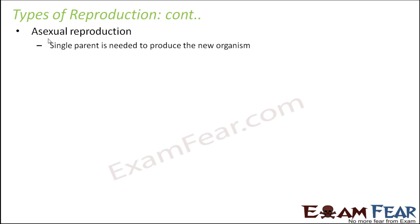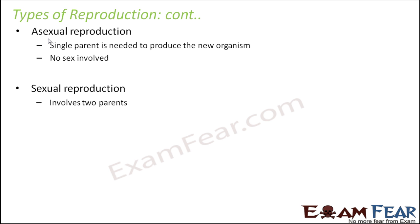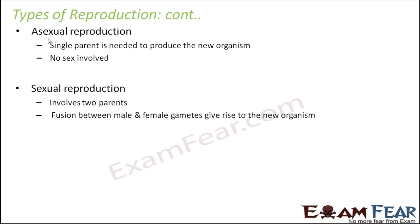In asexual reproduction, a single parent is needed to produce the organism. You do not need one male and one female — just one organism alone can produce a new organism. Therefore no sex is involved, meaning no differentiation of male and female and no interaction between male and female organisms. On the other hand, in sexual reproduction it involves two parents: there is fusion between the male and female gametes to give rise to the new organism.